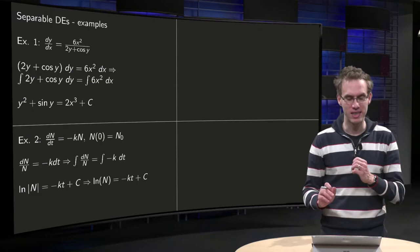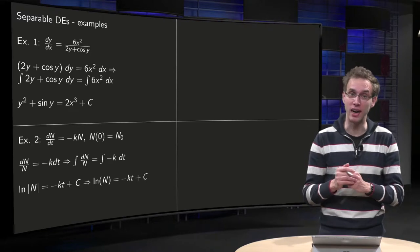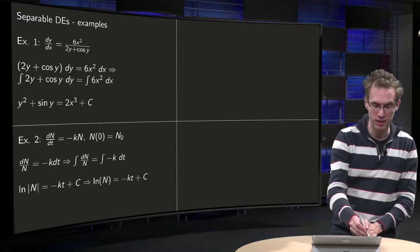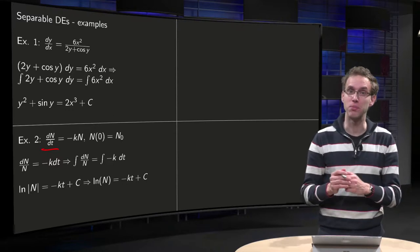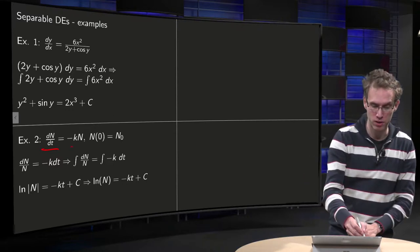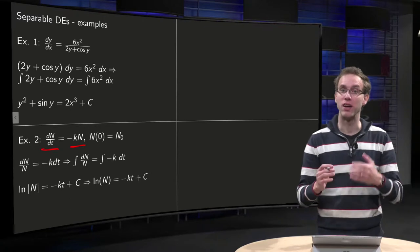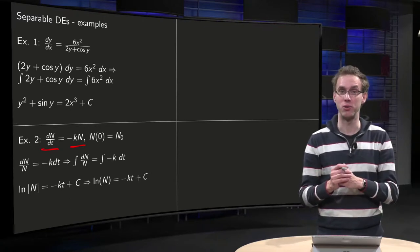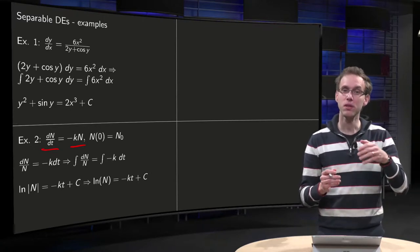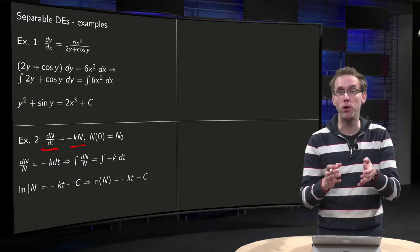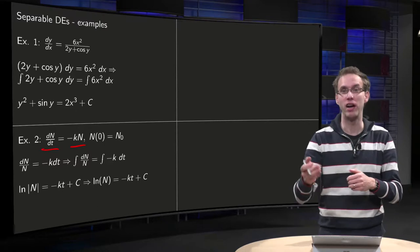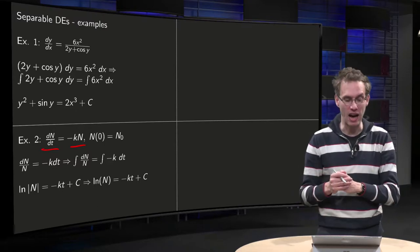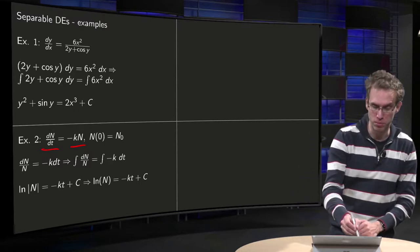Then we look at the second example, our radioactive decay problem. dn dt, where n is the number of atoms and t is time, equals minus k times n, where k is some proportionality constant. So the rate of change is proportional to the amount of atoms which are present. If you have more atoms, your rate of change will be higher. And you will start with some quantity n0.